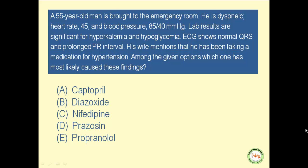How about nifedipine? It is a calcium channel blocker, and it can be used for the management of hypertension. It causes hyperglycemia, likewise diazoxide, by inhibiting calcium channels on the beta cells and dropping insulin output. Also, it neither causes hyperkalemia, nor does it cause bronchospasm. So nifedipine cannot be the correct answer either.